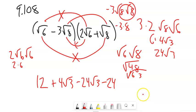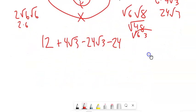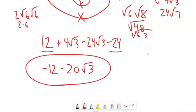And I can combine up some like terms here. There's your negative 12. And now I've got 4 root 3 minus 24 root 3, which would be negative 20 root 3. How's that look?